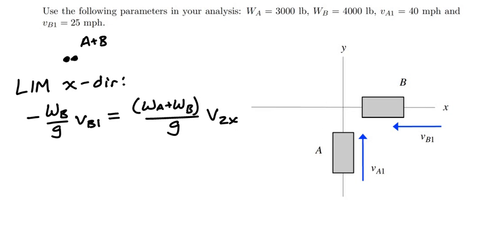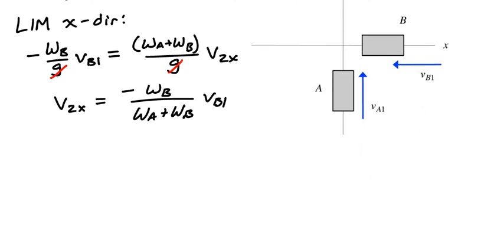From this, I can cancel out the g's, and I'll get that the velocity component in the x direction post-impact is given by minus WB divided by quantity WA plus WB times VB1. That gives me one of my answers to the problem.